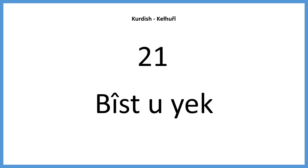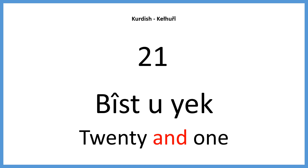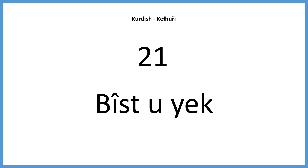The number 21 in Kurdish can be translated to English exactly as 20 and 1. The letter U on its own translates to AND in English. Every number between 20 and 100 except for multiples of 10 follow this simple rule. So 21 would be: beastu yek.